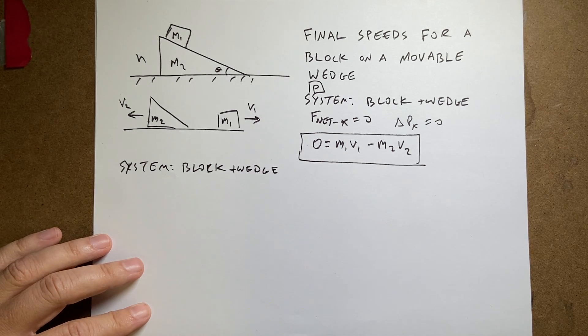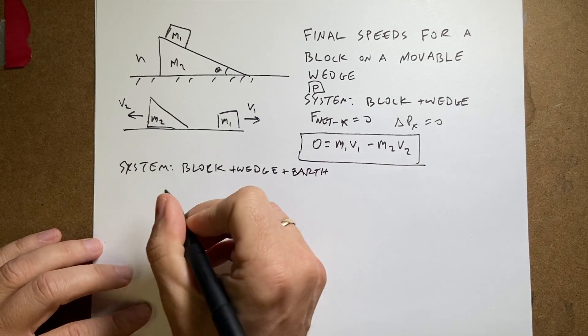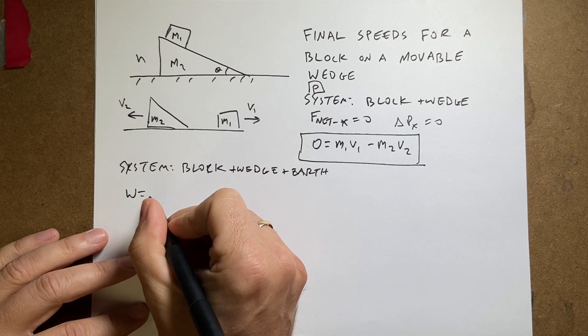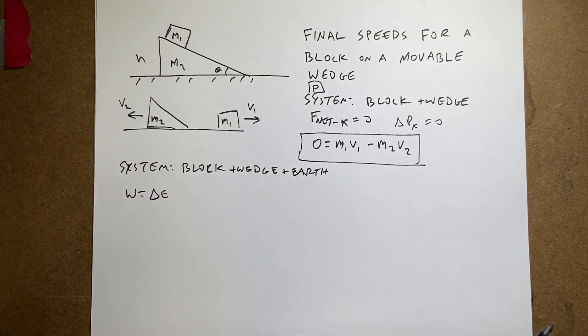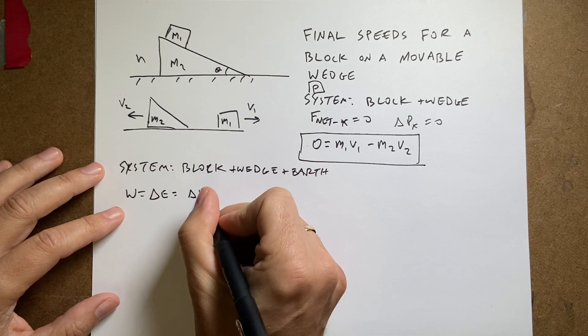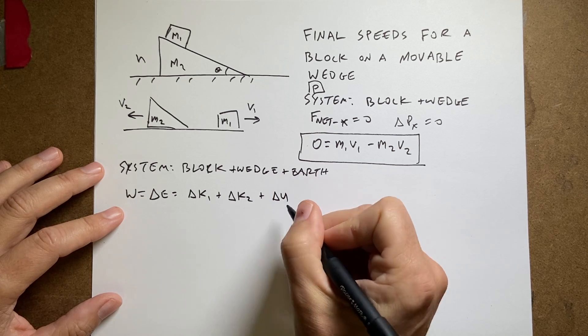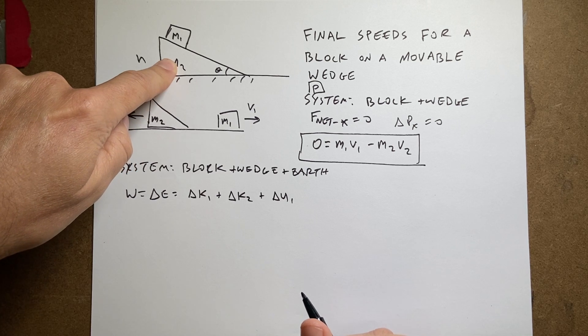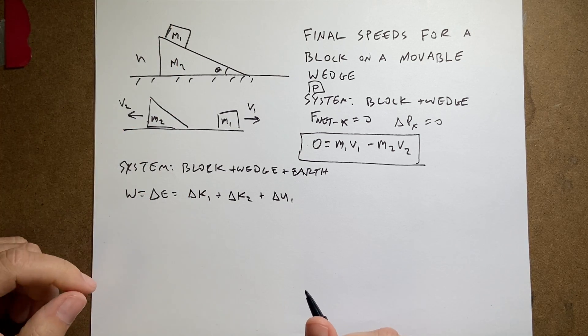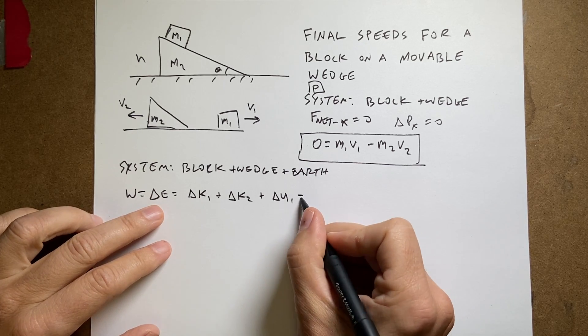And say the system block plus wedge. And when I say wedge, I always think of wedge from Star Wars, and I don't know why, but that's just what I'm thinking. Plus the Earth. So now I can say work is the change in energy. And if I include the Earth as my system, there's no external forces, so I will have potential energy. So it's going to be delta K1 plus delta K2 plus delta U1. The mass 2 does not change in potential energy because it doesn't move up and down. So there's no work done. So that's zero.